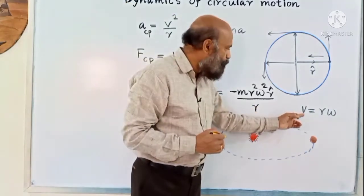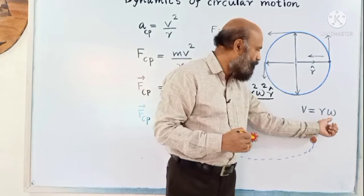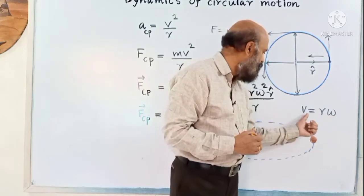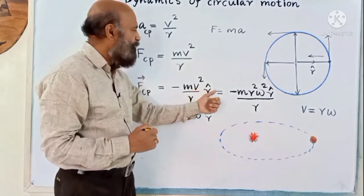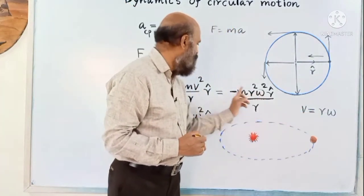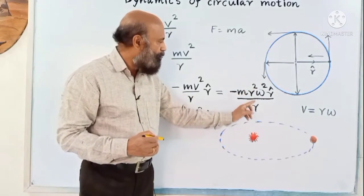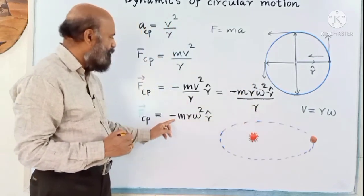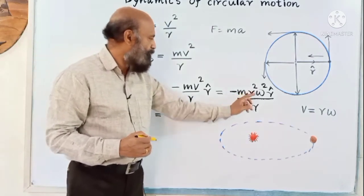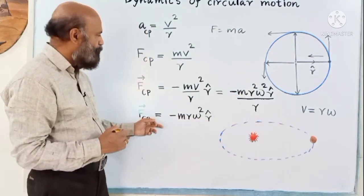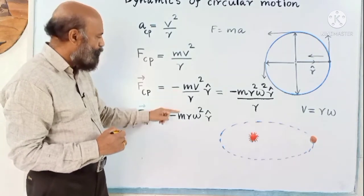There is a relation between linear velocity and angular velocity: V = Rω. We can substitute for V. Writing Rω and squaring it gives R²ω², divided by R, one R cancels, giving centripetal force as −MRω² R̂. So the expression for centripetal force can be written either as −MV²/R · R̂ or as −MRω² R̂.